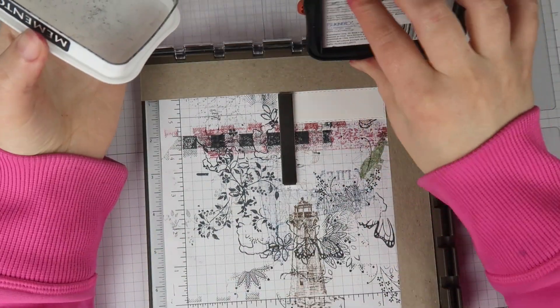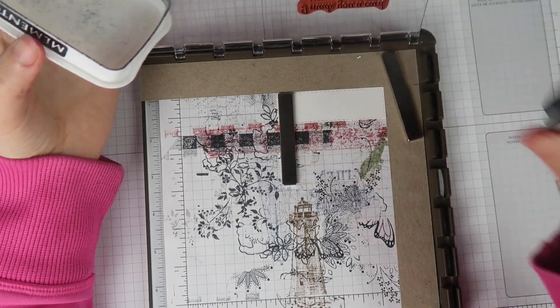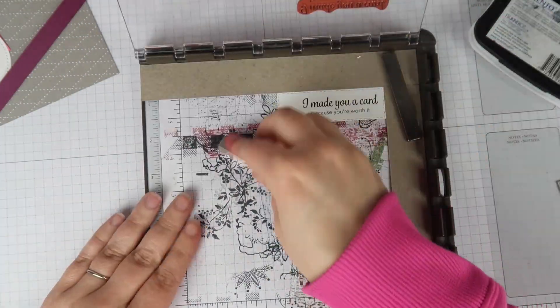I used a small rectangle die for my sentiment. And since my Stamparatus was already out, I went ahead and used that to stamp it down.